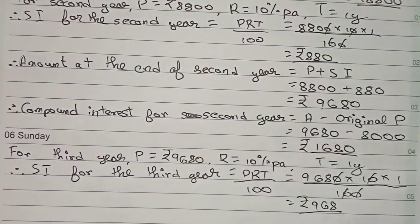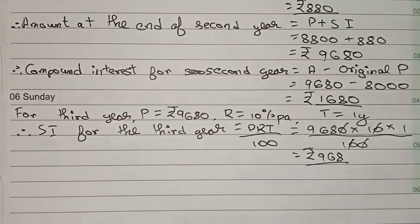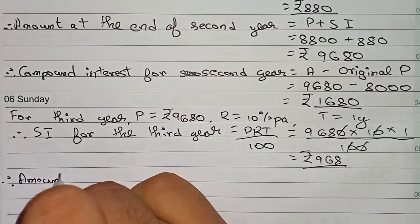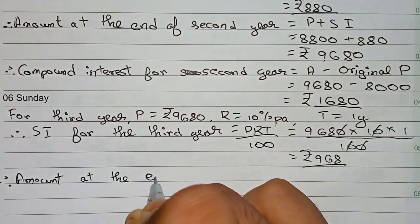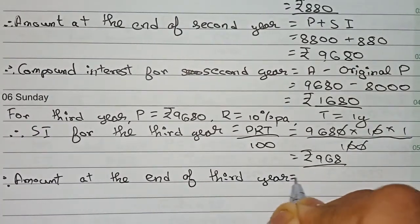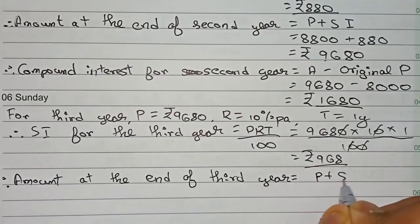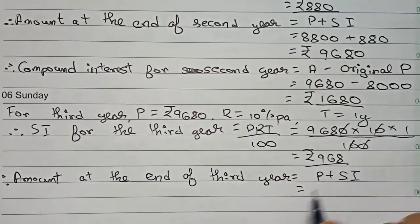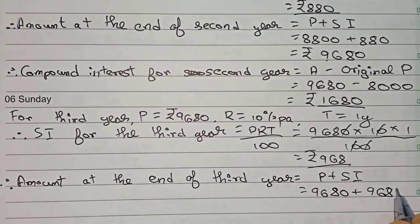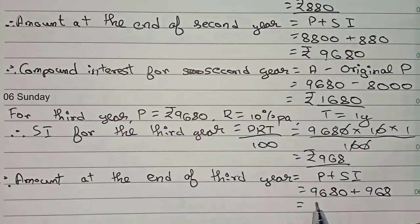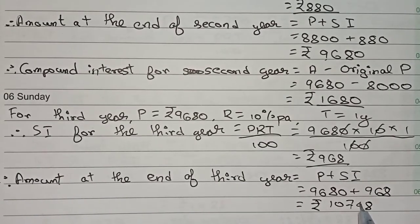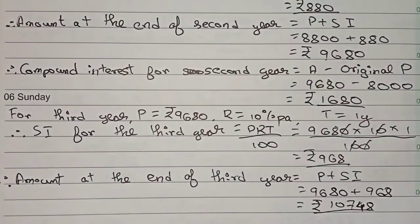The last step is to find the amount at the end of the third year. Using Principal + SI: 9680 + 968 = rupees 10,648. This is the amount at the end of the third year and the final answer for this question.